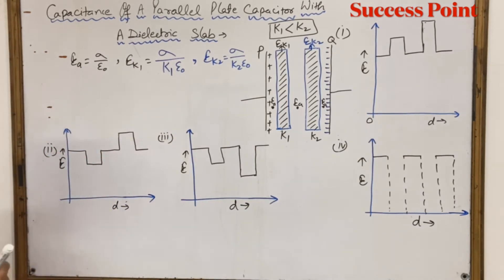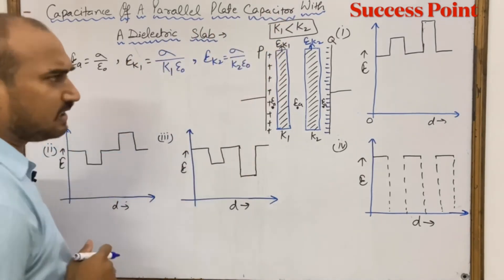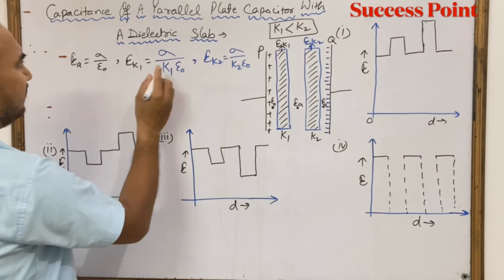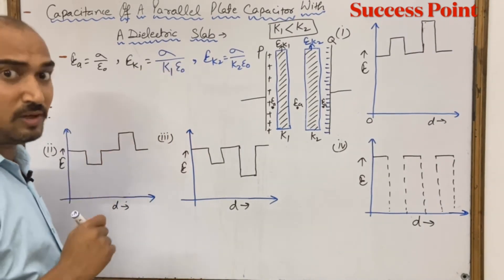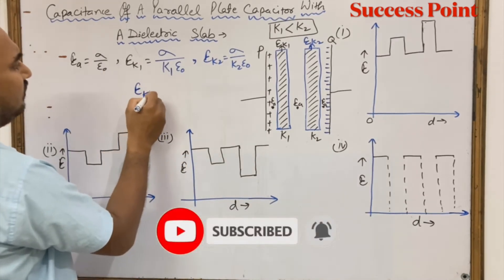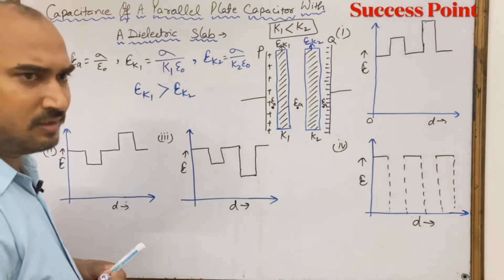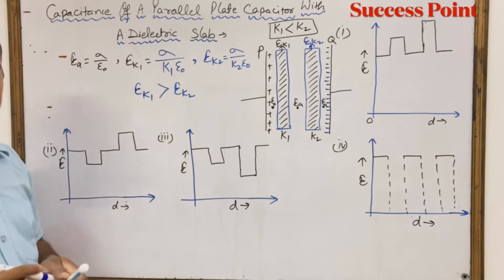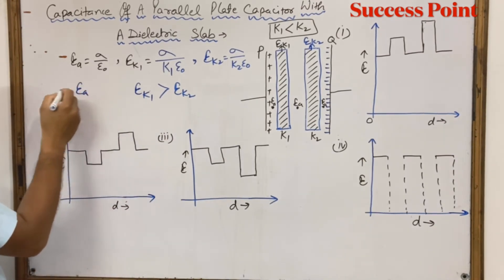If K1 is less than K2, then EK1 will be greater than EK2. And we know that Ea will be greater than both EK1 and EK2.